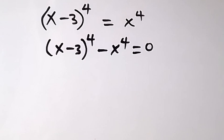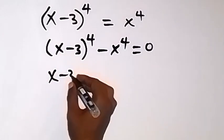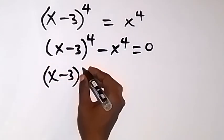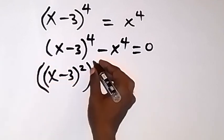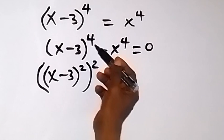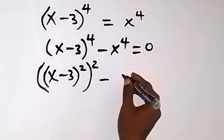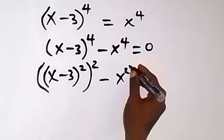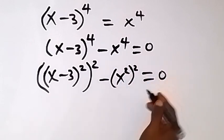We can rewrite this in another way: x minus 3 squared, then raised squared again. As we know, the two powers multiply and we get back x raised to the power 4. Same thing here — we have x squared, then raised squared, then equals 0.